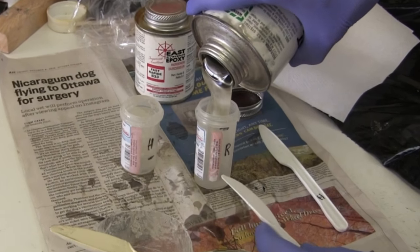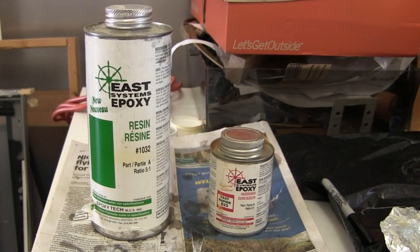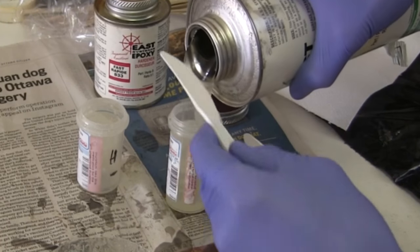I start by measuring out some resin. I have a mark on the container. This particular resin is to be mixed by volume, with a ratio of 5 to 1. For every five parts of resin, I have to put one part of the hardener. Check your resin for how you're supposed to mix yours.